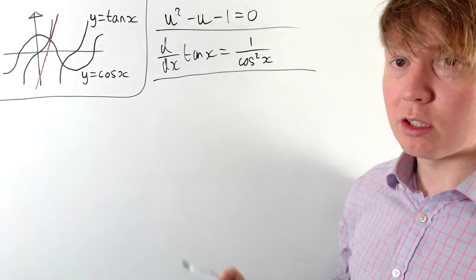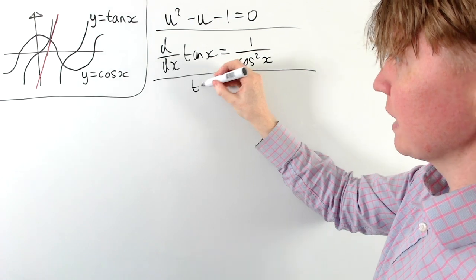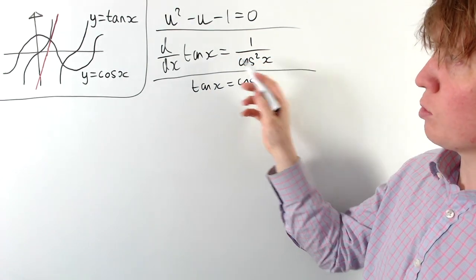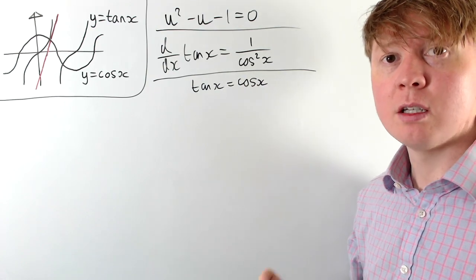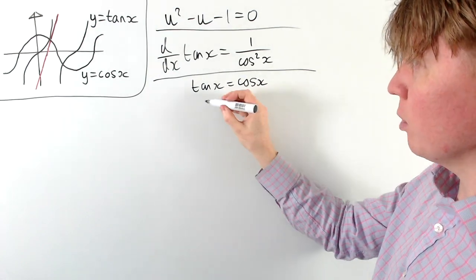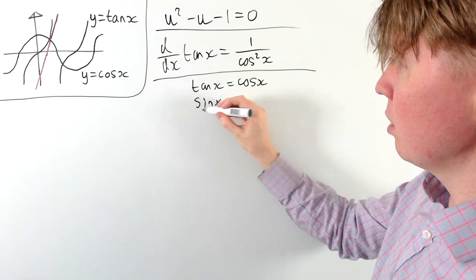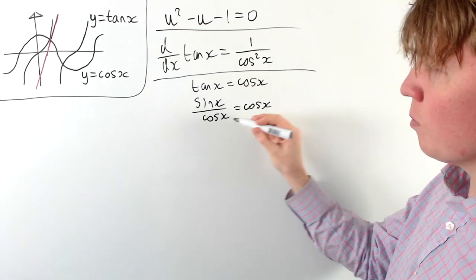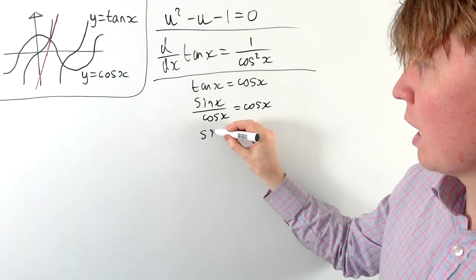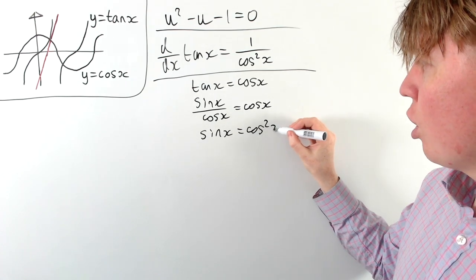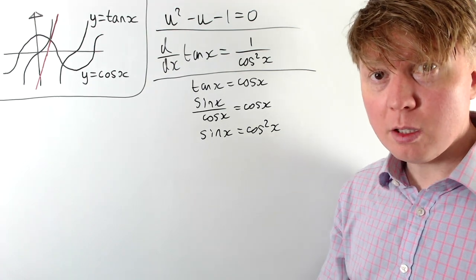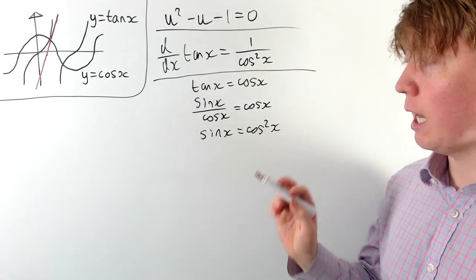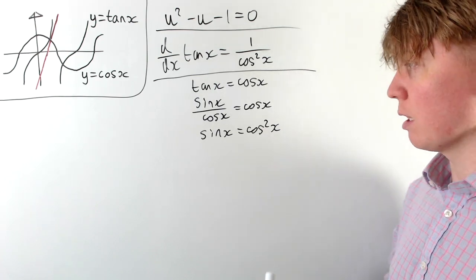Now we need to find where the two functions actually intersect each other, so we're solving tan x equals cos x. Splitting tan into sin x over cos x equals cos x allows us to multiply by cos on both sides, giving us sin x equals cos squared x.